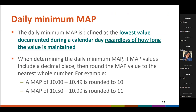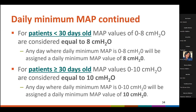Let's move on to MAP, or mean airway pressure. The daily minimum MAP is defined as the lowest value documented during a calendar day, regardless of how long the value is maintained. When determining the daily minimum MAP, if the MAP values are documented out to decimal places, you will round to the nearest whole number: 0.00 to 0.49 rounds down and 0.50 to 0.99 rounds up. Additionally, if the patient is less than 30 days old, MAP values between 0 and 8 are assigned a daily minimum value of 8. For patients aged 30 days or older, MAP values of 0 to 10 are assigned a daily minimum value of 10.